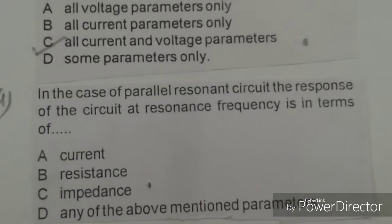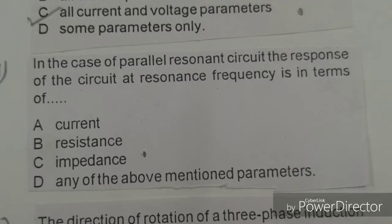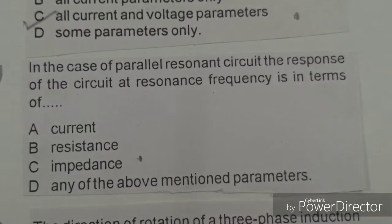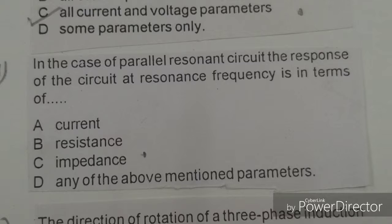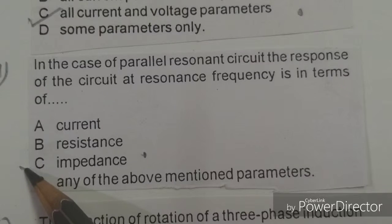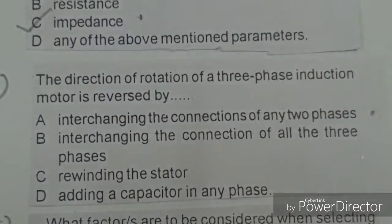Next objective: In the case of a parallel resonant circuit, the response of the circuit at resonance frequency is expressed in terms of. Options given: current, resistance, impedance, any of the above. The right answer is C, impedance. Mark here.